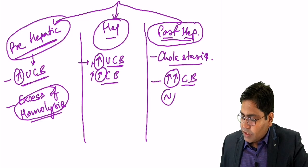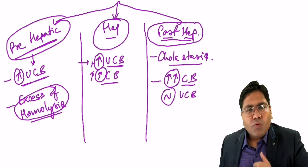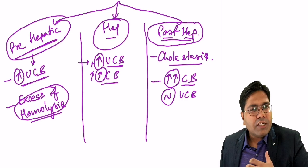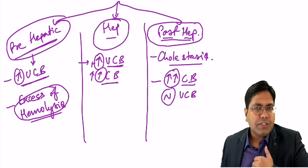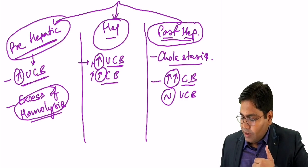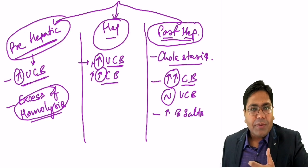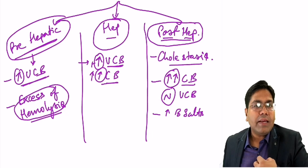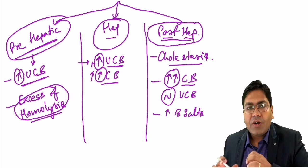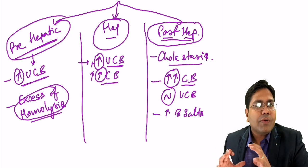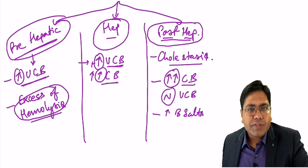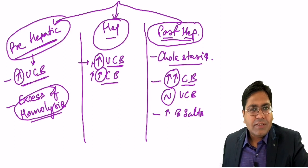In such a condition, unconjugated bilirubin will be nearly normal. There will also be excess of bile salts, because even bile salts, bile acids, and the entire bile juice will not be able to excrete out.